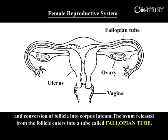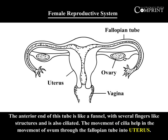The ovum released from the follicle enters into a tube called the fallopian tube. The anterior end of this tube is like a funnel with several finger-like structures. The movement of these structures helps in the movement of the ovum through the fallopian tube into the uterus.